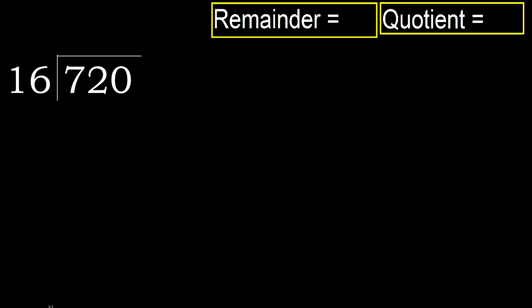720 divided by 16. 7 is less, therefore next. 72 is not less, therefore with 72, 16 multiplied by which number is nearest to 72 but not greater.